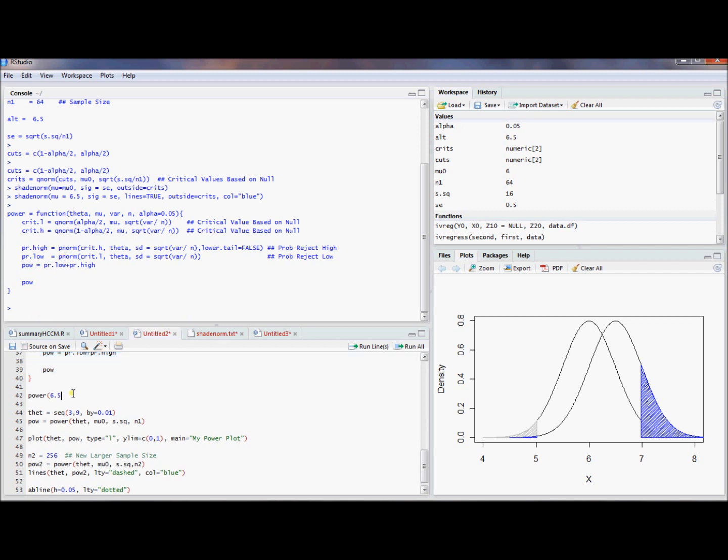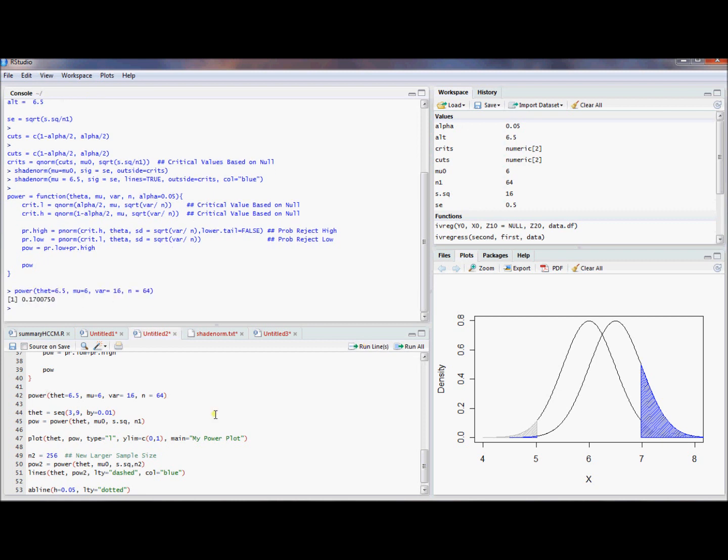So if we want the power for 6.5, we want to know what's the probability I reject if the truth is 6.5. The null hypothesized value was 6. The variance was 16. And the sample size was 64. And I want to know what was the power of that? I can ask myself. And that's actually going to tell us exactly what the power is. It's going to be a probability of .170. So that's the probability we would reject if the truth really was 6.5.